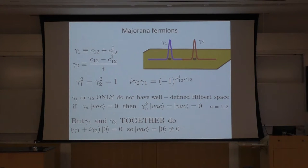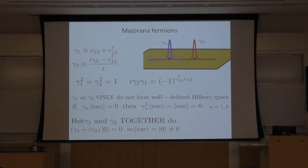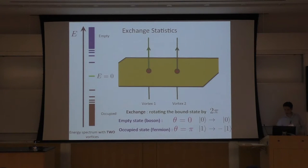However, if I take two Majorana fermions — gamma one and gamma two — together, I can define a well-defined Hilbert space. I can form gamma one plus i·gamma two, which gives me the original C₁₂. For that, I can define a Hilbert space because C acting on the vacuum gives zero — but the zero state is not the zero number. So I need two Majorana fermions to define a physical Hilbert space.